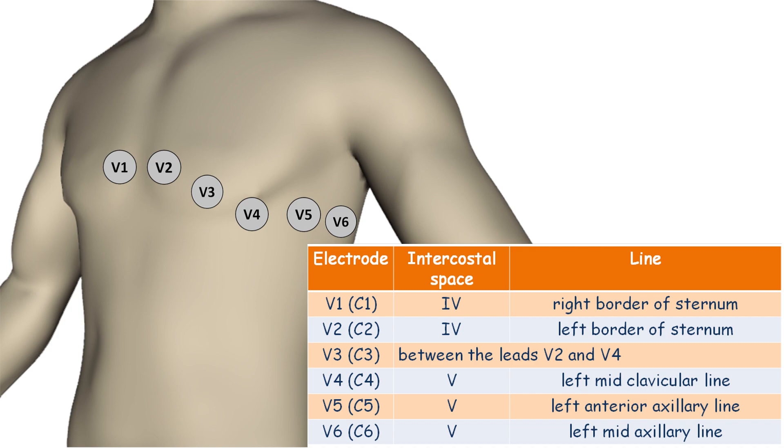V5 is attached at the 5th intercostal space at the left anterior axillary line. V6 is placed at the 5th intercostal space at the left midaxillary line.